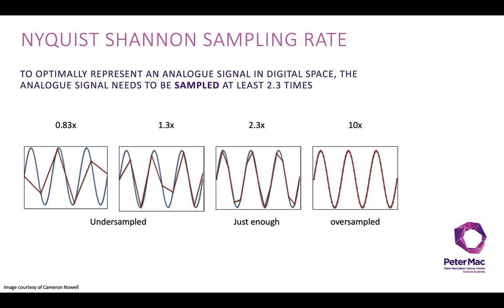Fortunately, there's an equation to help determine appropriate sampling — the Nyquist-Shannon sampling rate. This states that to optimally represent an analog signal in digital space, the analog signal needs to be sampled at least 2.3 times. At 0.83× we're undersampling — the digital representation doesn't match the analog signal. At 1.3× it's getting closer. At 2.3× the digital sampling is pretty close. At 10× it's a much better representation, but this may be oversampling.